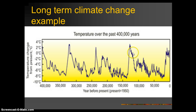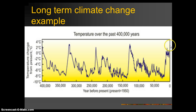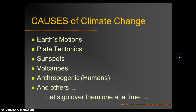Humans weren't necessarily around during those past warming situations, so natural causes drove those changes. Those natural processes are still occurring at regular rhythms, but now we have humans in the picture. Humans are emitting carbon dioxide and other greenhouse gases at an alarming rate, and the rate at which we're seeing this warming is astounding. That is the core issue — the rate at which global warming is happening. Possible causes of climate change are a major benchmark you need to know about, and there are many.